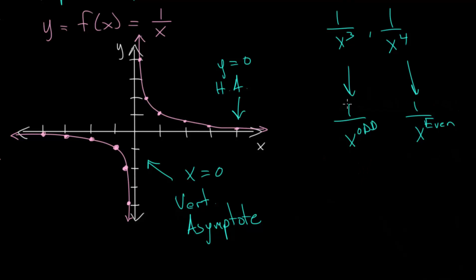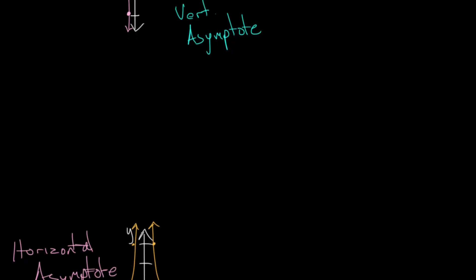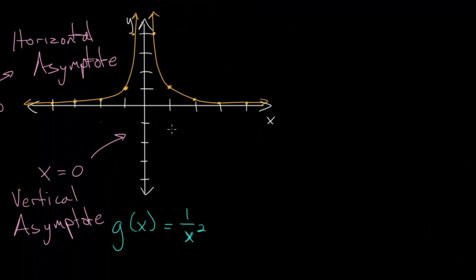Effectively, when you have 1 over x to an odd power, it's going to look like this parent function, since this is the simplest odd power we can raise it to. And 1 over x to an even function is going to look very similar to this graph here, since this is the smallest even power we can raise it to. So we'll notice those patterns and be able to make some generalizations with these rational functions.